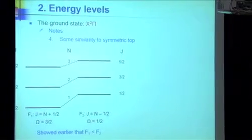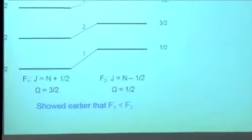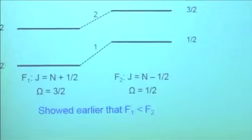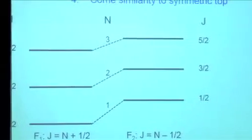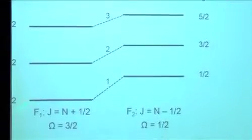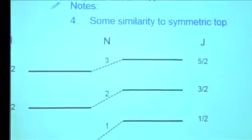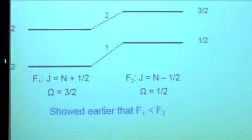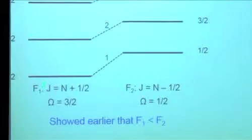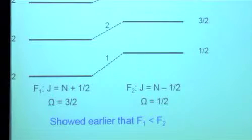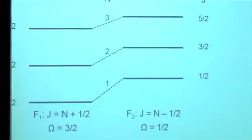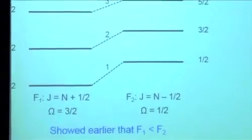Ground state: F₁ is J equals N plus a half, F₂ is J equals N minus a half. The J values are 3/2, 5/2, 7/2. For N=1: this is an F₂ (J=1/2 from the 1-1/2 side) and this is an F₁. Because A is negative, that's why the 3/2 state is lower than the 1/2 state. So if you know the sign of A, you already know which state is lower.